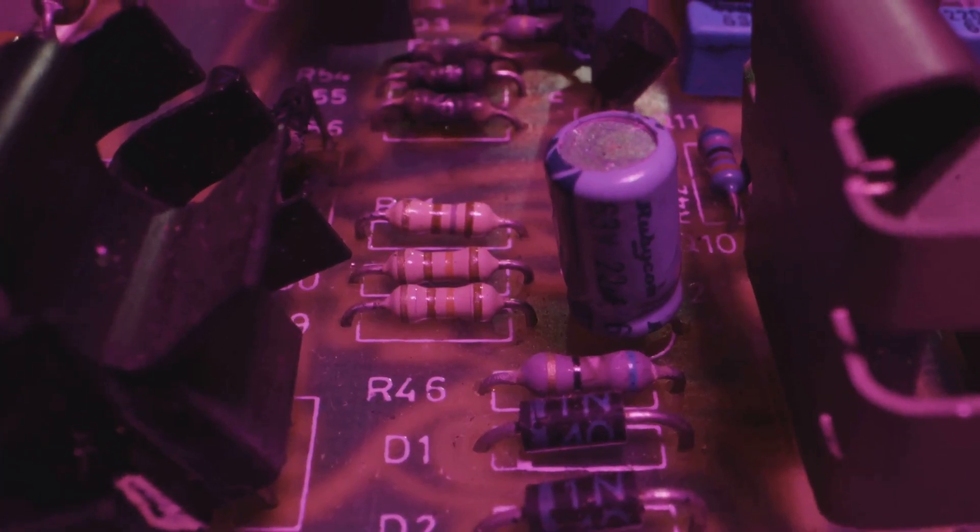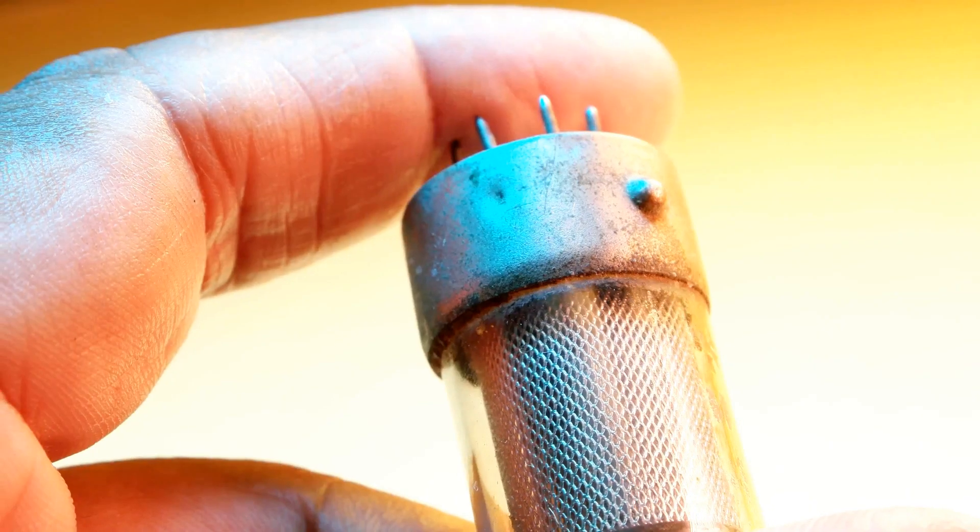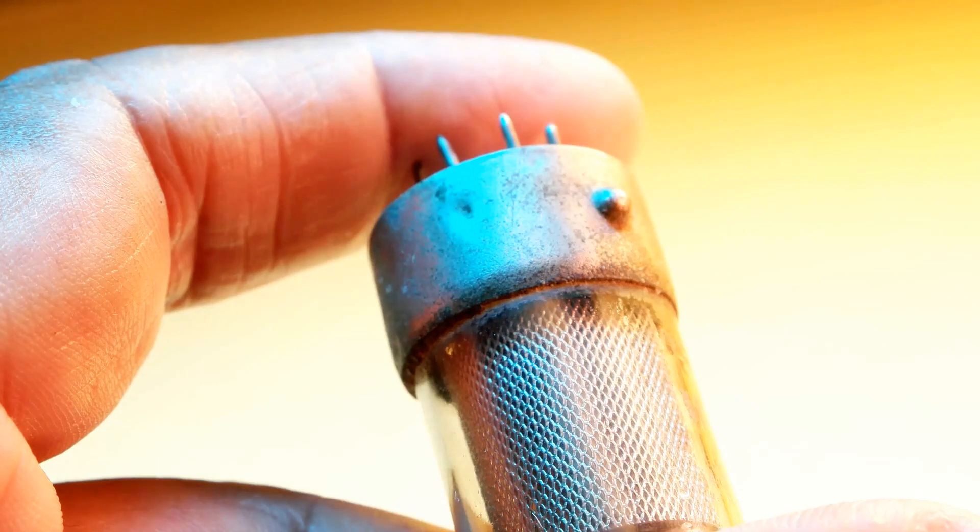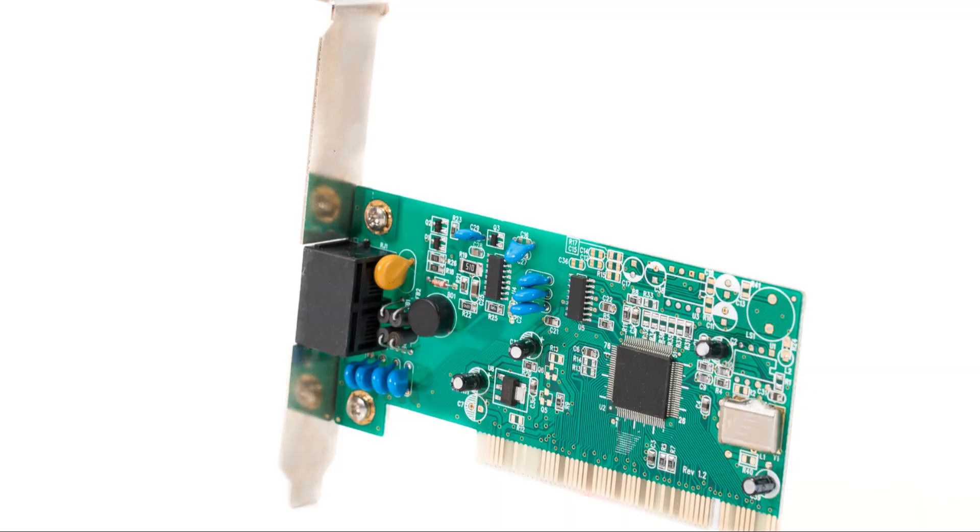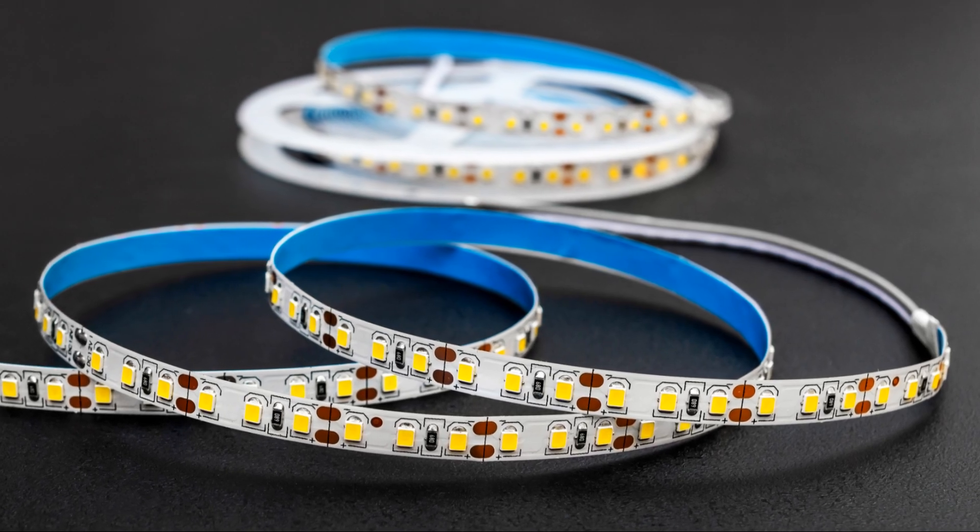The invention of the transistor in 1947 revolutionized electronics. This led to the development of semiconductor diodes, which were smaller, more efficient, and more reliable than their vacuum tube counterparts. Semiconductor diodes quickly replaced vacuum tube diodes in most applications.